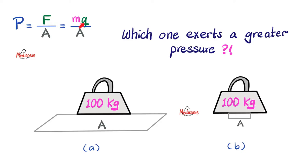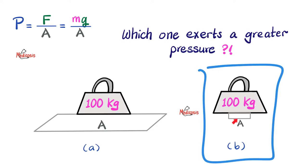G for physicists is not the same as G for psychologists. G in psychology or neuroscience is something else — if you know what I'm talking about, comment below. It's the same mass — 100 kilograms and 100 kilograms. G never changes because it's caused by the same gravity. The only difference is in A, the surface area. One is huge and one is tiny. So which one is exerting higher pressure? The answer is B, because the surface area is smaller. If the surface area is smaller, the pressure is higher, provided the force remains constant.